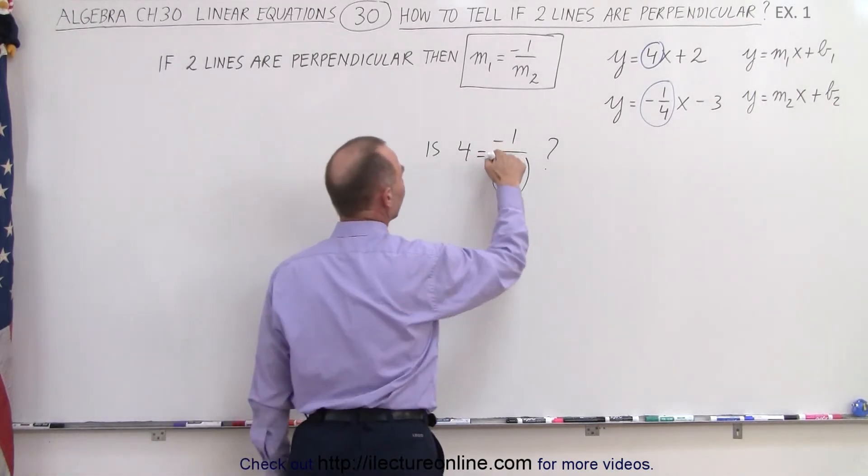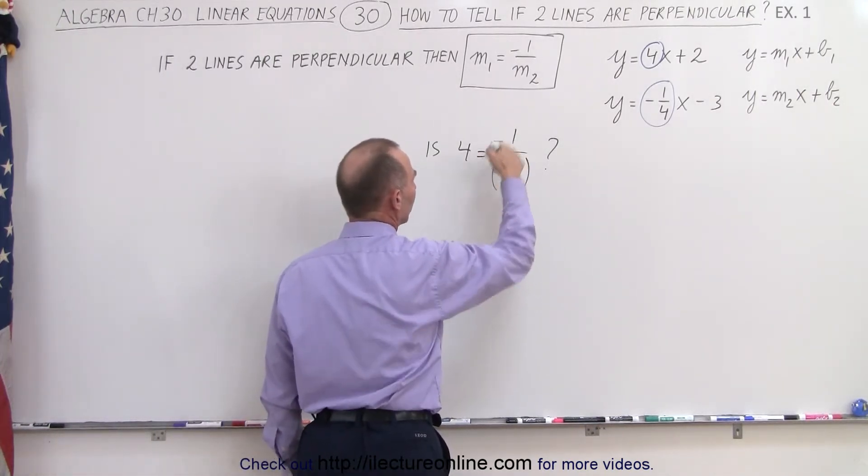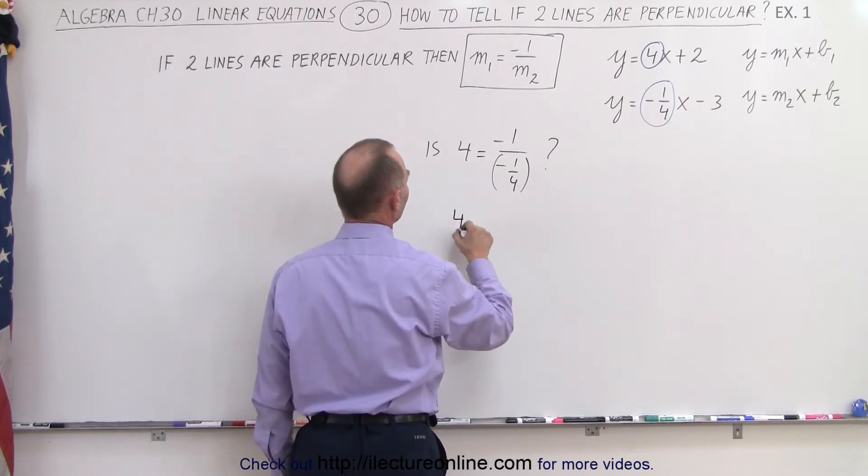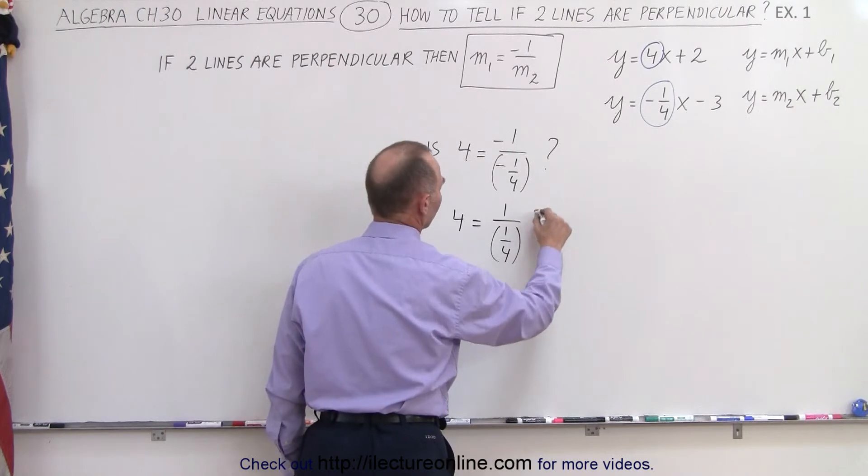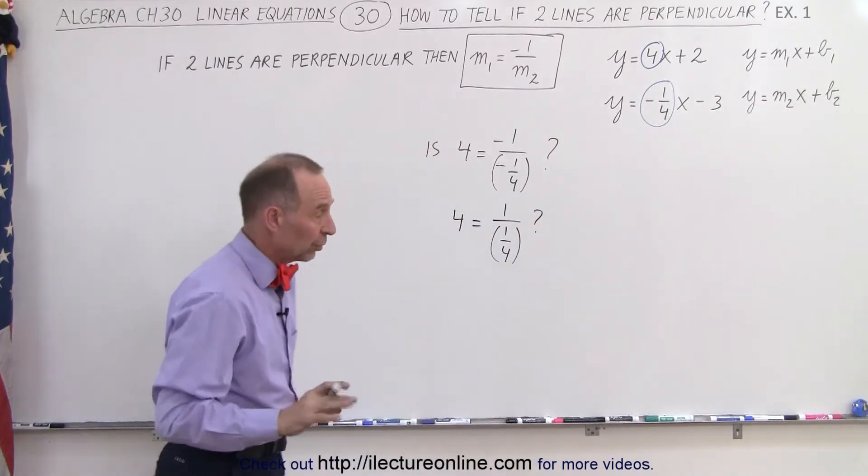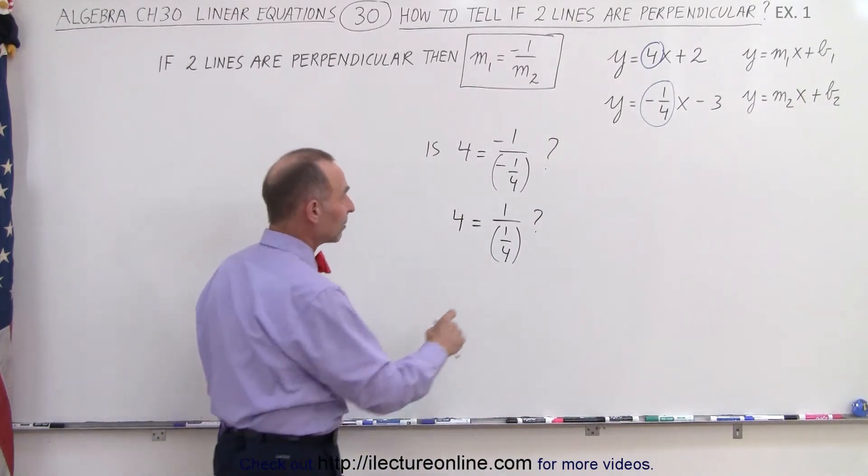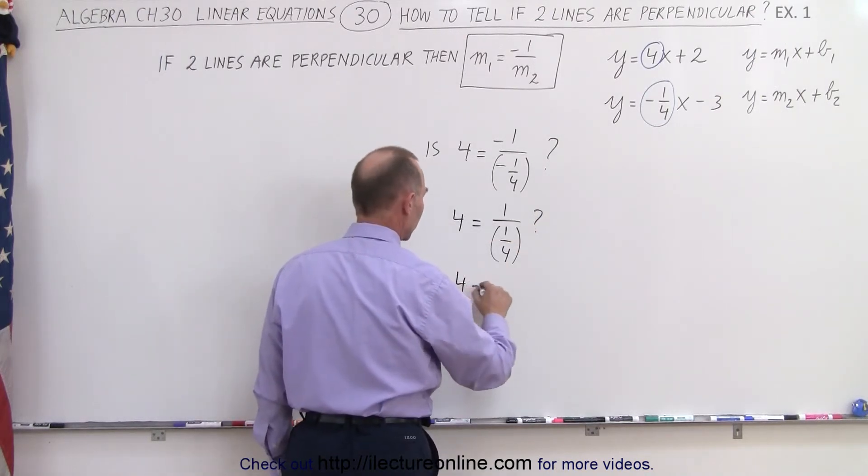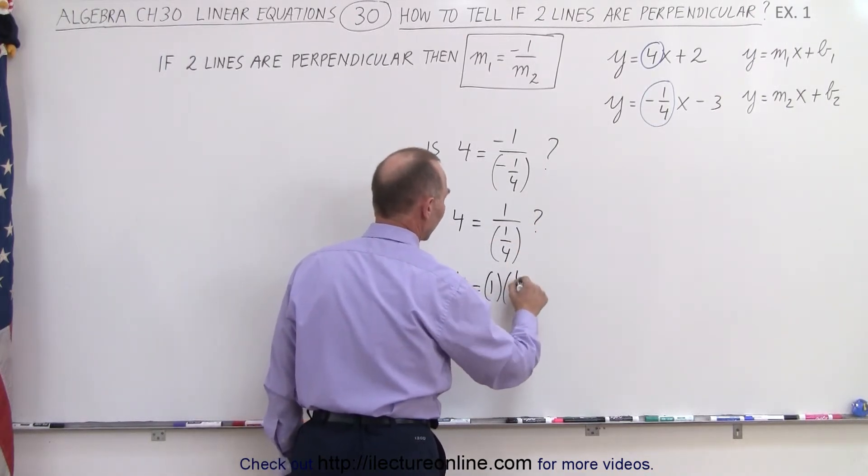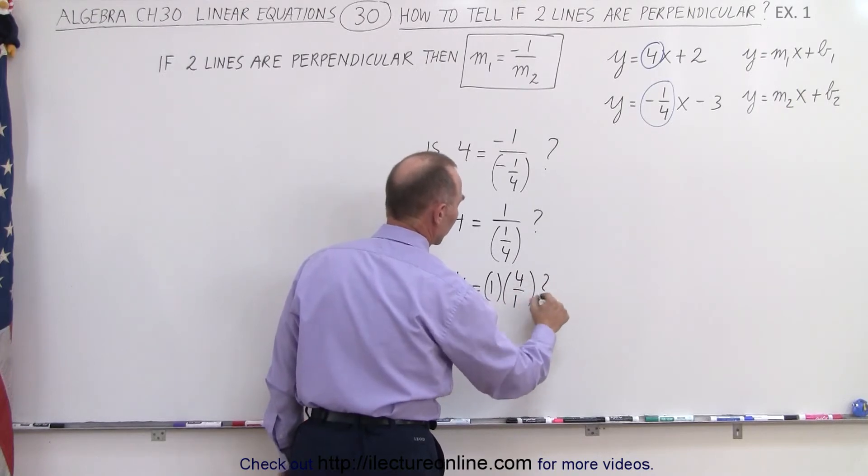First of all, we have a negative and a negative, so we can multiply both the top and bottom by negative. So we can say that 4 equals 1 over 1/4. When we divide by a fraction, it's the same as multiplying by its inverse. So 4 equals 1 multiplied by 4 over 1.